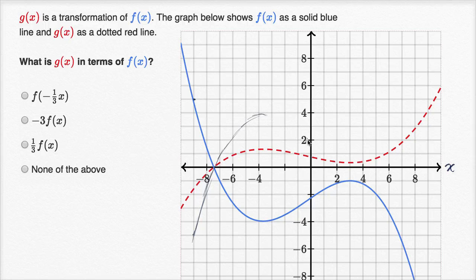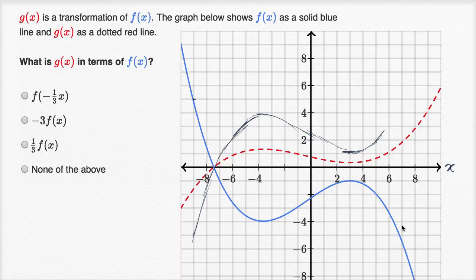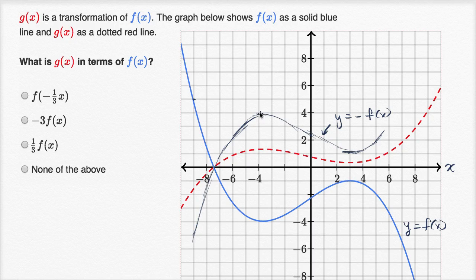Trying my best to eyeball it, it would look something like this if you perfectly just flipped it over. So let me be clear: if this is y equals f of x, then this line right over here that I just drew would be y equals negative f of x, because whatever f of x gives, you just take the negative of it — you're flipping over the x-axis.